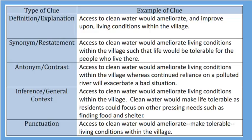The last type of clue we're going to look at is punctuation. For example: 'Access to clean water would ameliorate — make tolerable — living conditions within the village.' Those dashes separated out basically the definition of what ameliorate means, using punctuation to help define that one word. It is very important to learn these types of clues. Please pause the video and write down these five types of clues for contextual analysis of words with unfamiliar meanings. You do not have to write the examples of the clue, but I highly suggest that you do.